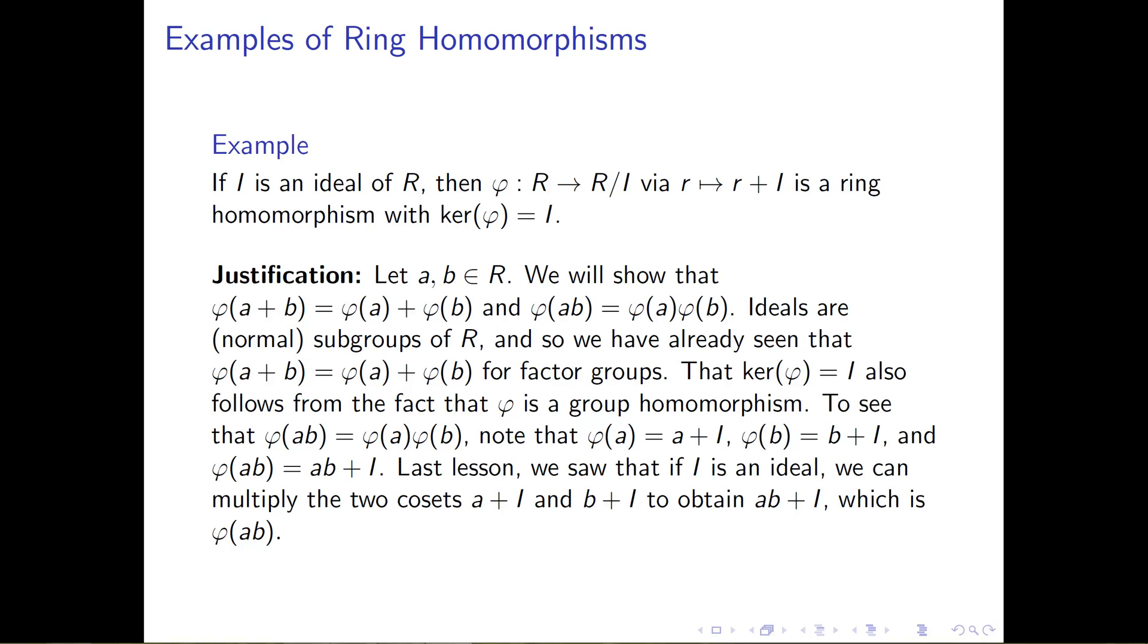And this idea of taking a ring, which is a group, and looking at the cosets defined by a normal subgroup, this is the idea of a group homomorphism, and this isn't new to us either. So, if we take for a minute the ring R and the ring R mod I, and just forget that they're rings and remember that they're groups,